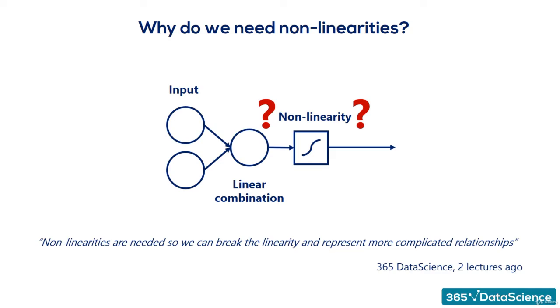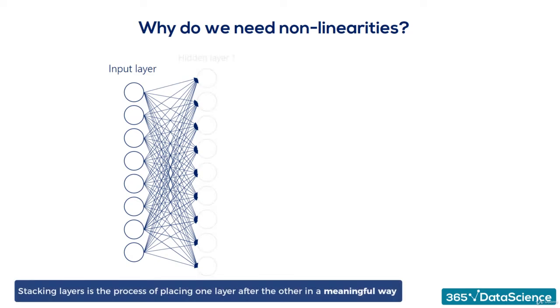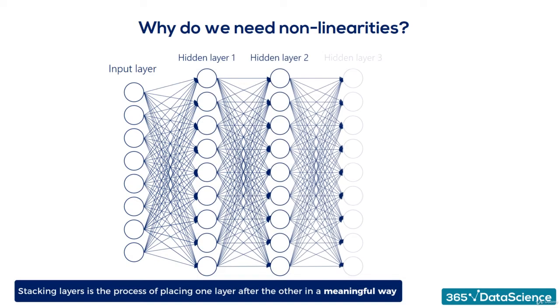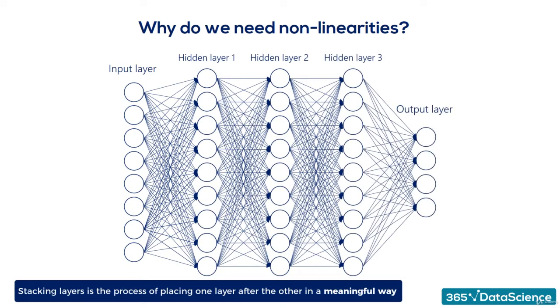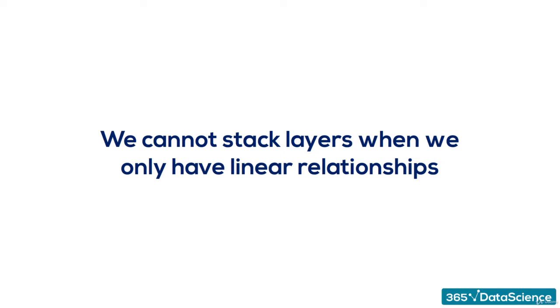An important consequence of including non-linearities is the ability to stack layers. Stacking layers is the process of placing one layer after the other in a meaningful way. Remember that, it's fundamental. The point we will make is that we cannot stack layers when we have only linear relationships. Let's prove it.